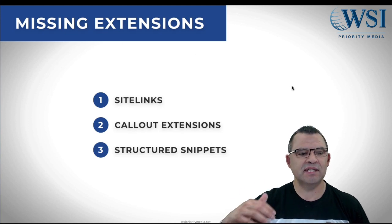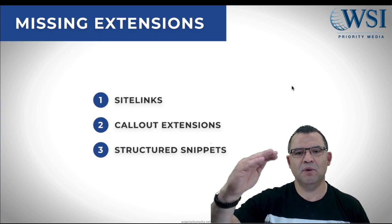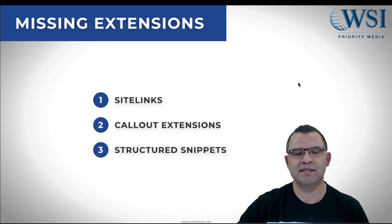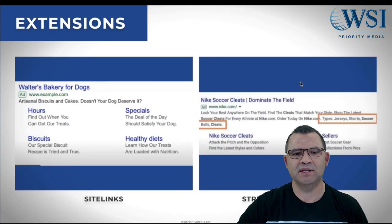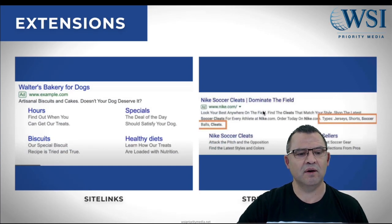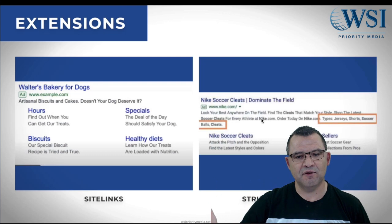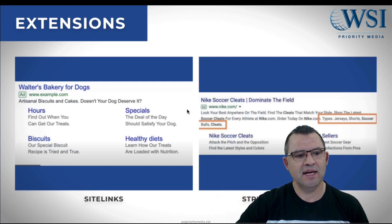The next error is missing extensions — sitelink extensions, callout extensions, structured snippets. They are completely free. They're gifts. But so many times people don't take the time to set them up and utilize them. The advantage is free real estate. Your normal Google ad has just the link and the description. But if you go a little bit further and actually map your site links, now you get all of this real estate completely free.